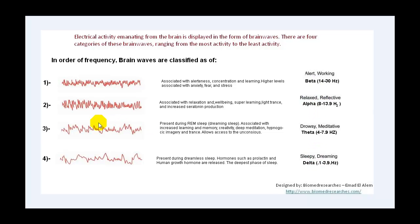The third type of brain wave is the theta brain wave which ranges from 4 to 7.9 hertz and can be noticed in drowsy state. It can be noticed also during the REM sleep, dreaming sleep. Associated with increased learning and memory, creativity, deep meditation, depression, and allows access to the unconscious.